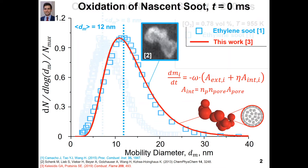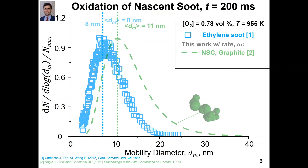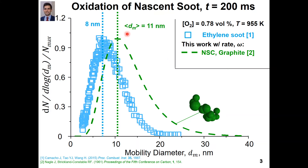We will compare our model to the size distribution obtained after oxidation for 200 milliseconds at these conditions, where the average mobility size decreases from 12 down to 8 nanometers. Firstly, we used as an input to our moving sectional model the oxidation rate derived for graphite by Nagle and Strickland-Constable. This results in an overestimation of the average soot mobility size by 40%, as you can see over here.